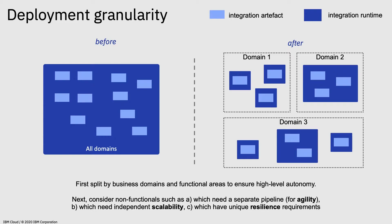We can also create resilience at that level — specifying that a particular integration should have many copies running, so that if there are any outages they're barely noticed. We might have four, five, ten, or eleven copies running, spreading the load much more effectively across different domains and capabilities. Being able to perform that kind of resilience is very important.